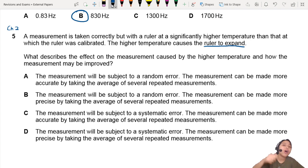What describes the effect on the measurement caused by the higher temperature? So your ruler has expanded. And how can the measurement be improved?